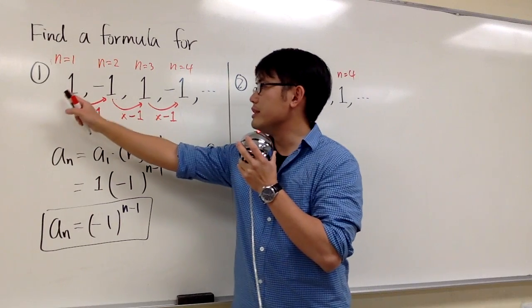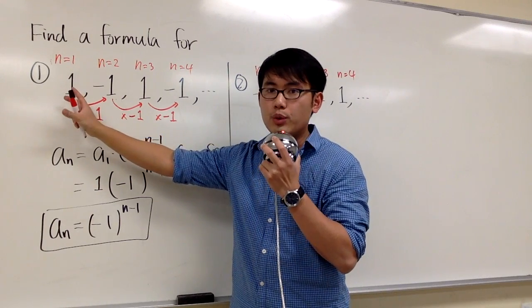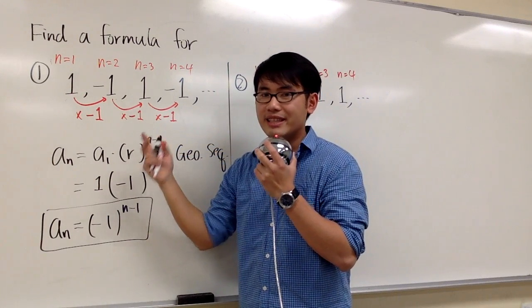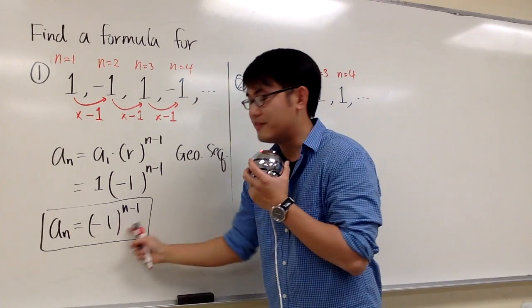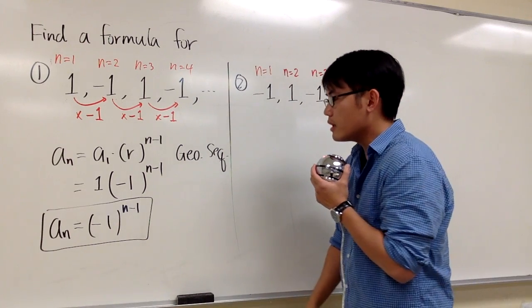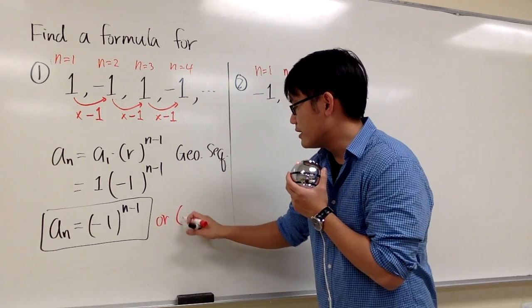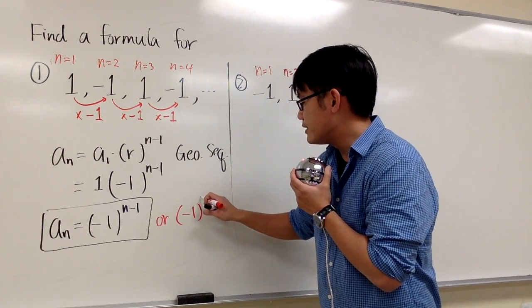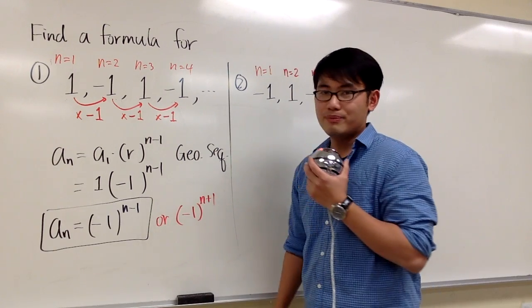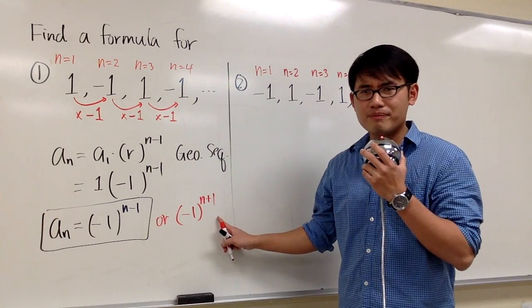So whenever you see in a sequence the sign alternates, most likely you are going to have this factor involved. However, I do want to make a remark. Some people may write it as negative 1 raised to the n plus 1 power. And is this okay? Yes, it is.